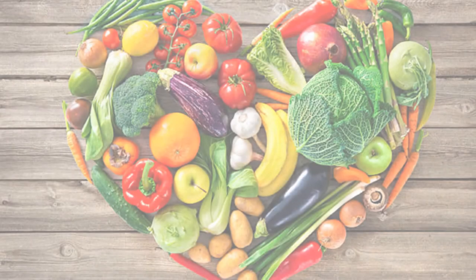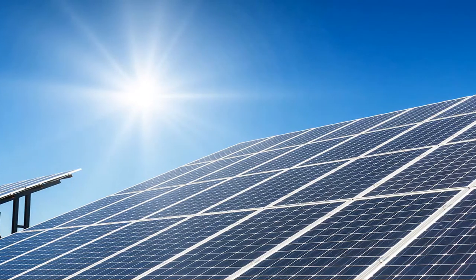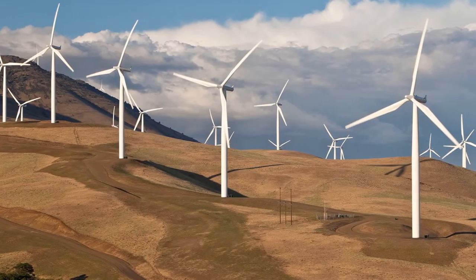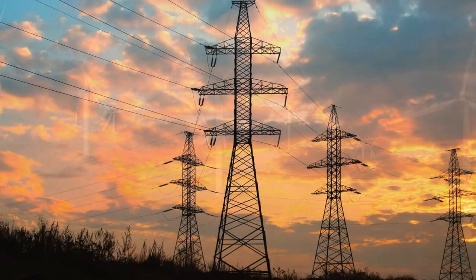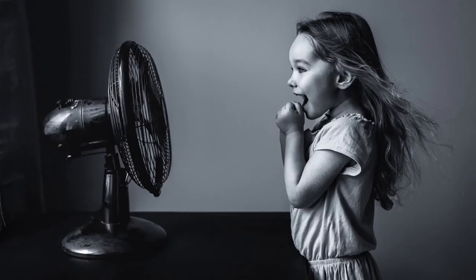In our universe, energy is available in various forms, like solar energy, wind energy, electrical energy, chemical energy and so on. Energy can be converted from one form to another by using various methods. For example, we can convert solar energy into electrical energy by using solar panels. We can convert the electrical energy into wind energy by using a fan.